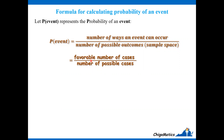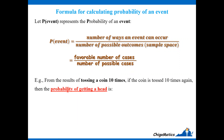It is important to know that as a fraction representing the probability, we need to identify the favorable number of cases over the number of possible cases. From the result of tossing a coin 10 times, if the coin is tossed 10 times again, the probability of getting a head is 7 over 10. Introducing the symbol P(H): probability of getting a head equals number of heads over number of tosses, which gives 7 over 10.